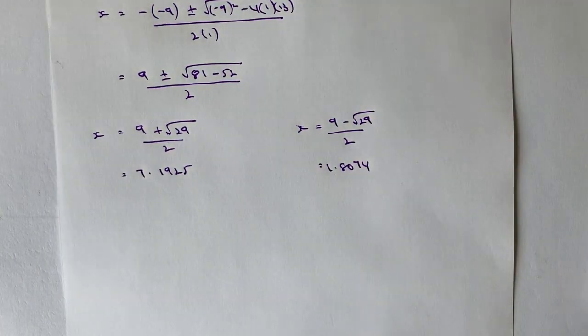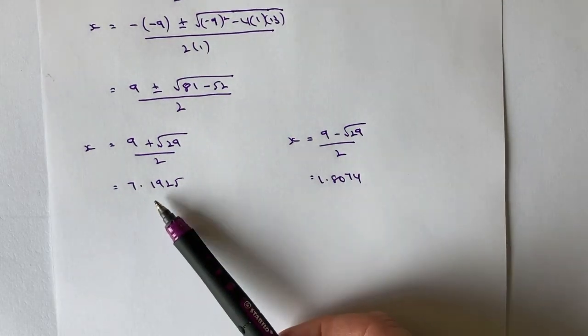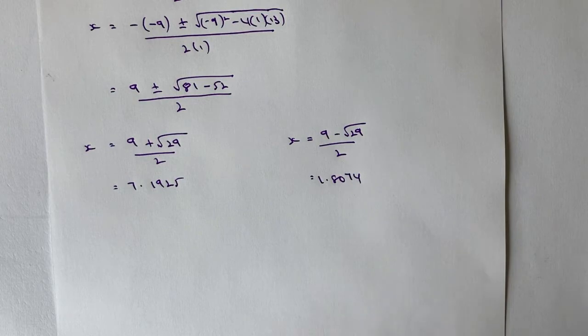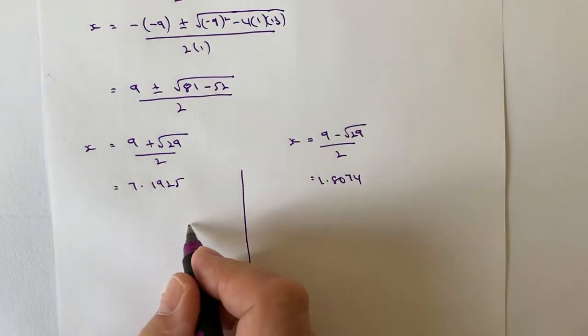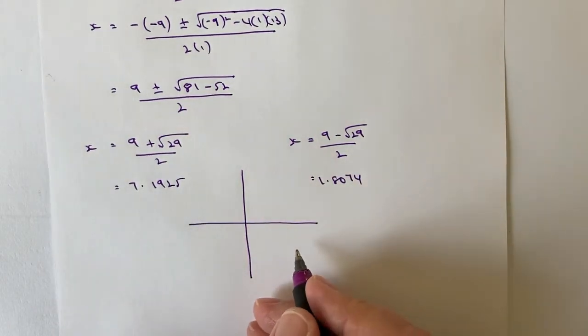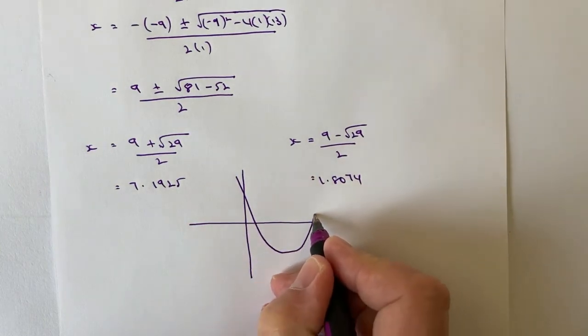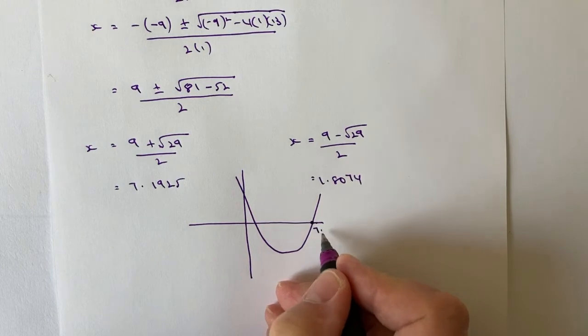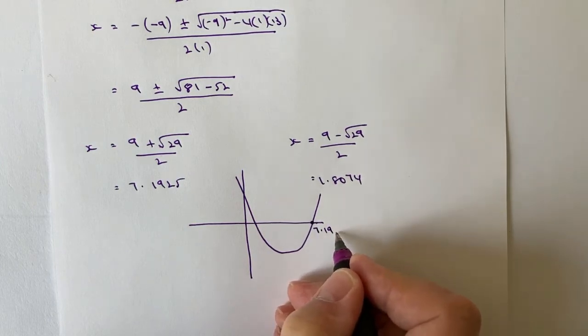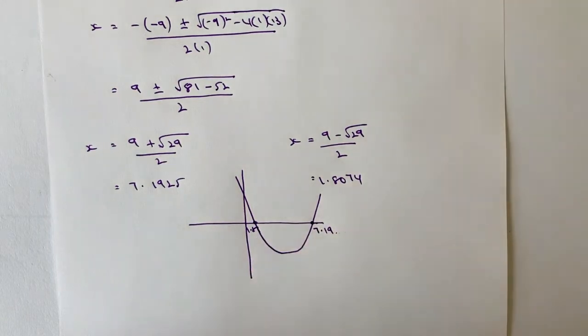Let's have a look at what's happening with this particular quadratic. Bearing in mind, these are the two values of x where it's cutting through the x-axis. If I drew that, I would draw it something like that, where this value here is basically 7.19 and this value here is 1.81.